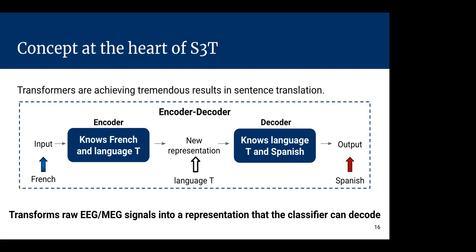This is similar to what we want to do. We take the raw EEG and MEG signals and transform them into a new representation that the classifier can decode. Inside this representation, we want the maximum amount of temporal and spatial information.